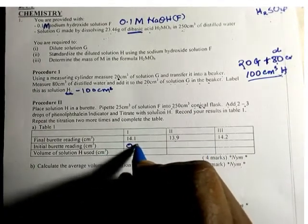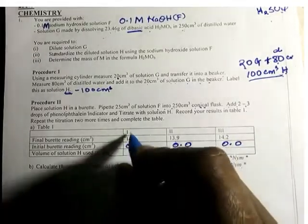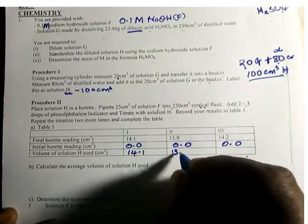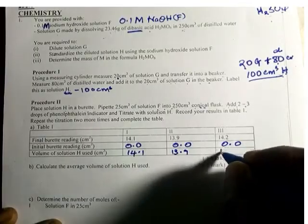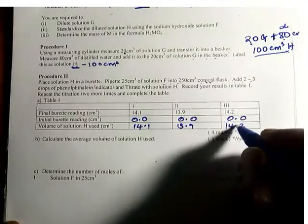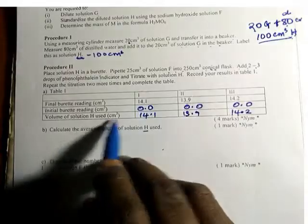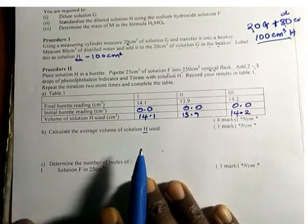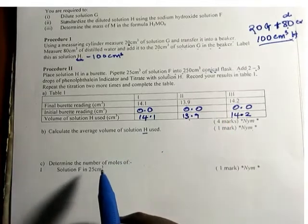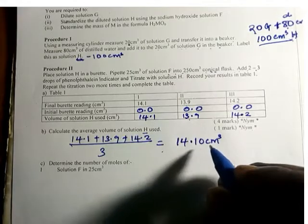We complete the table taking the initial burette reading as 0.0 each time. Subtracting gives titre values of 14.1, 13.9, and 14.2 cm³. To calculate the average volume of solution H used, we add these and divide by 3, giving an average of 14.10 cm³.